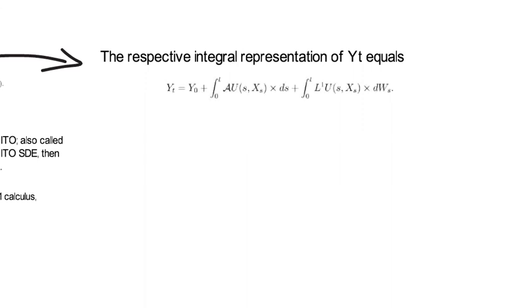Last not least language-wise, that strange looking term AU is also called the generator of an Ito process U.